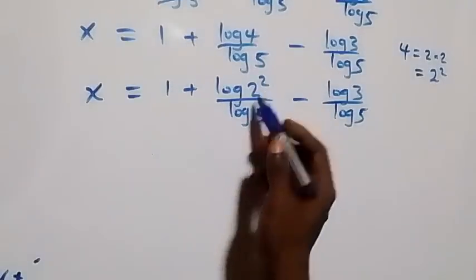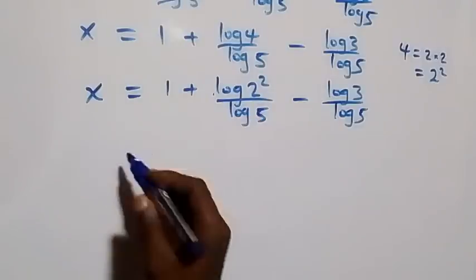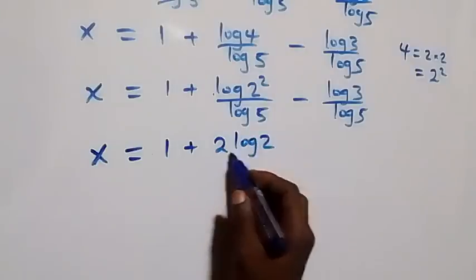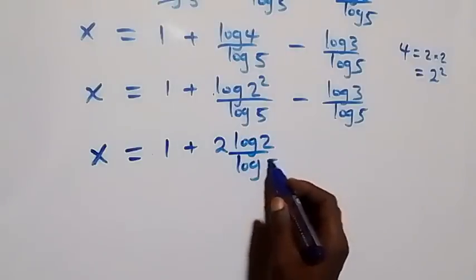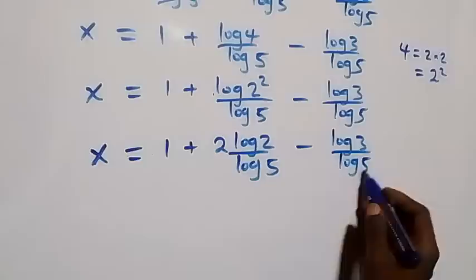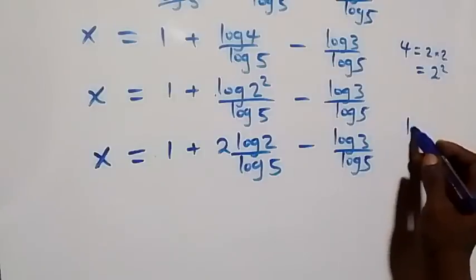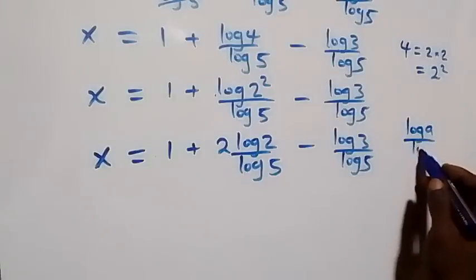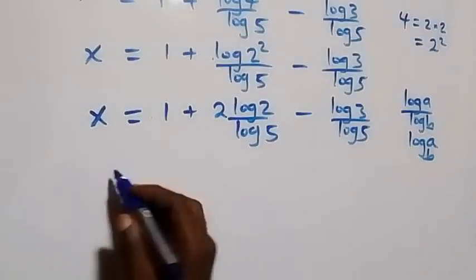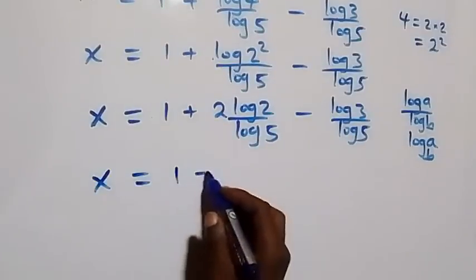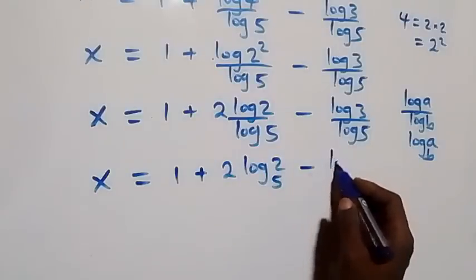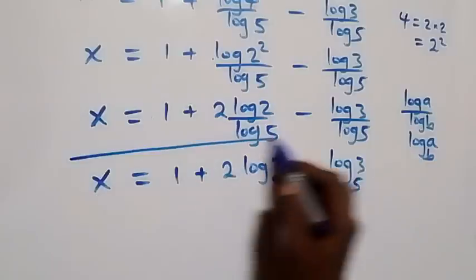Here we apply the power law of logarithms, so the exponent 2 comes to the front, giving x equals to 1 plus 2 log 2 over log 5, minus log 3 over log 5. We can also apply the change of base rule: log a over log b is the same thing as log a to base b. So we have x equals to 1 plus 2 log 2 base 5, minus log 3 base 5.